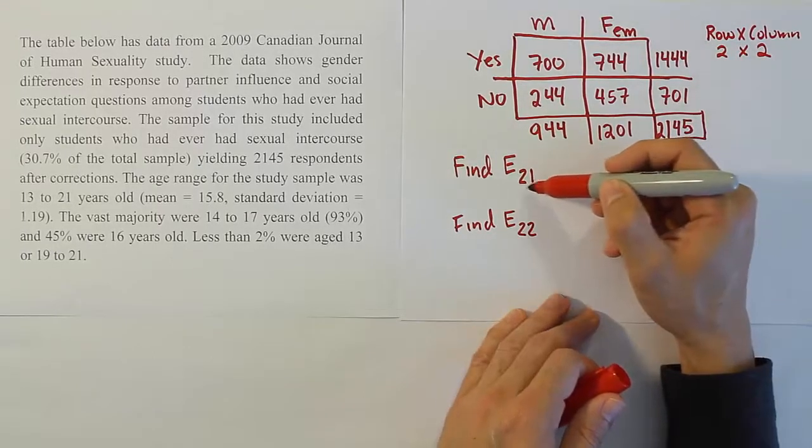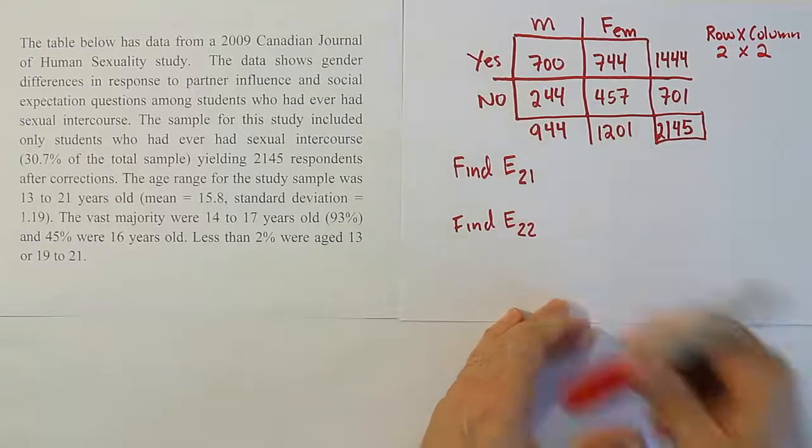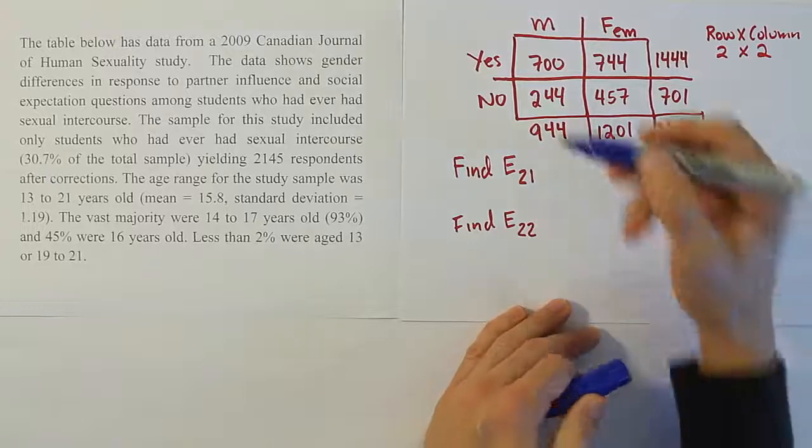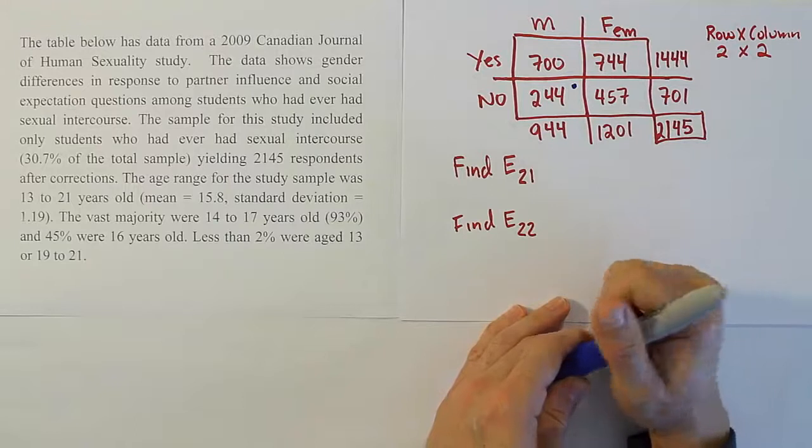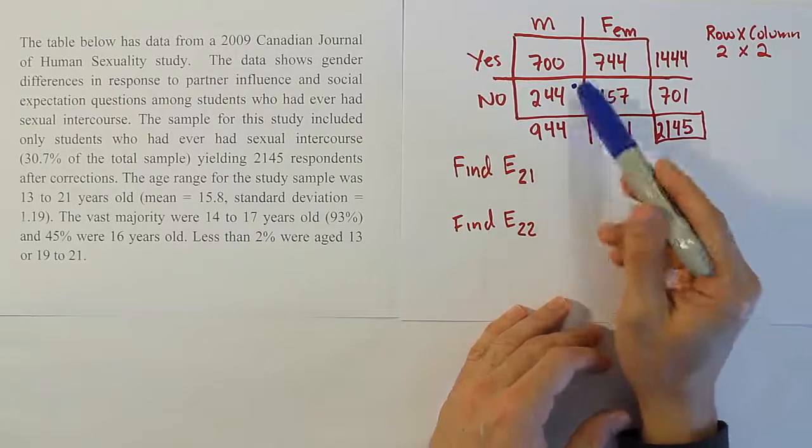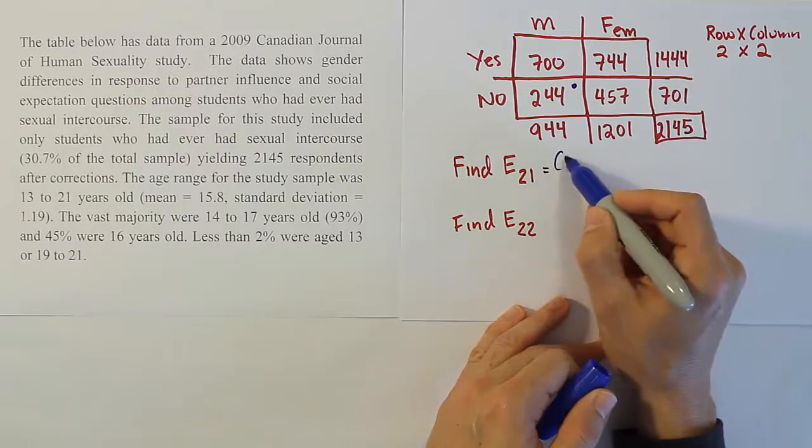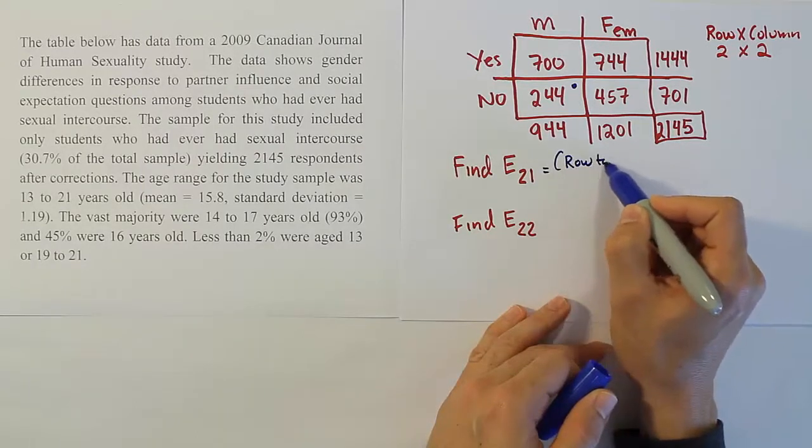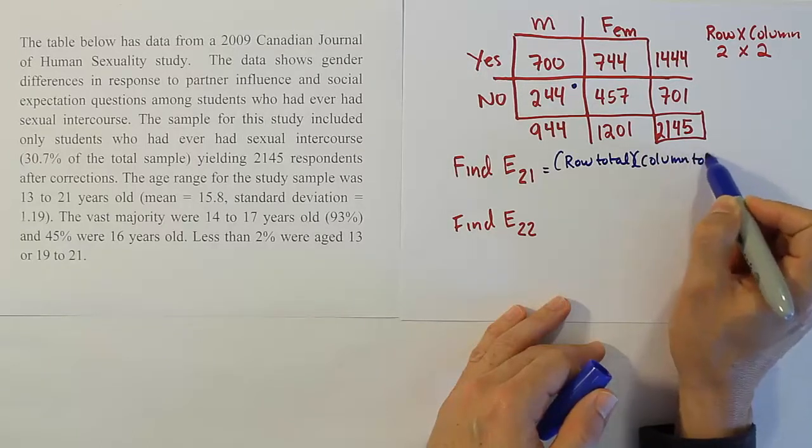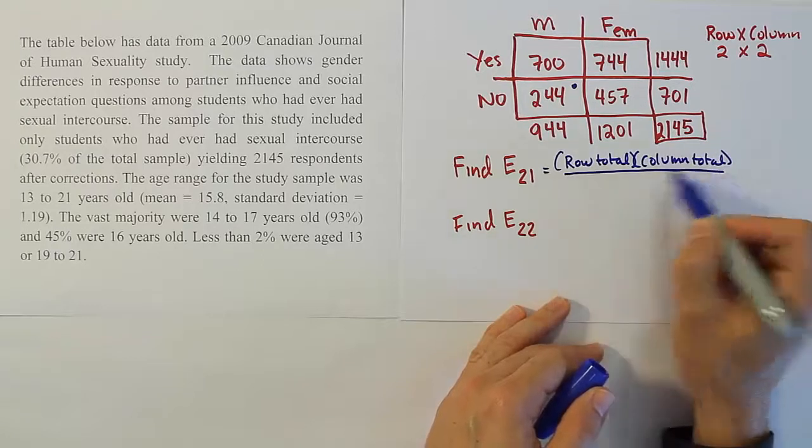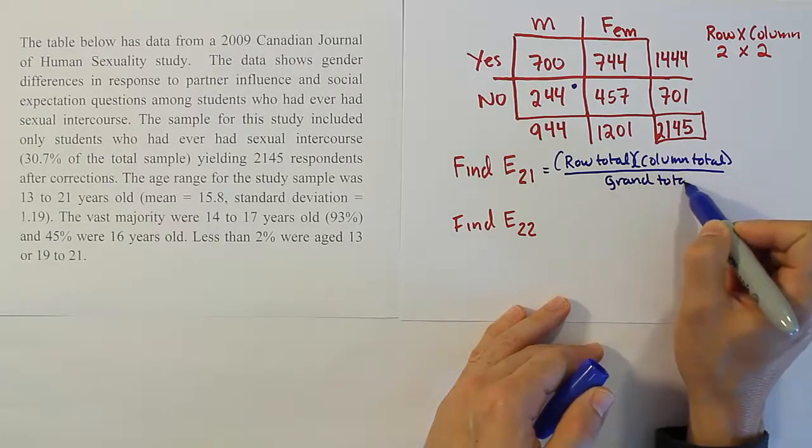This is the row number, this is the column number. They're telling us to find the expectation for the cell that has that address. It's saying the second row, first column. So we're talking about this guy here. What they would like us to do is to find the expected value for that cell. The formula is actually very easy. It's going to always be the row total times the column total over the grand total.